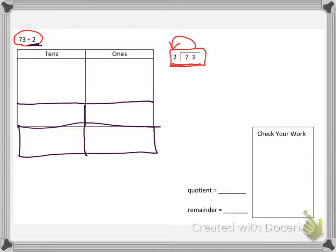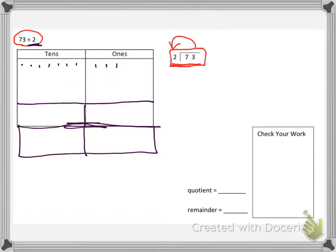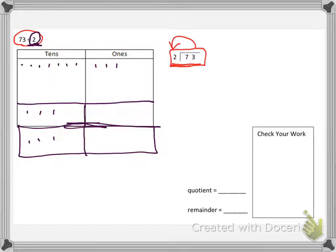We're going to make this into two groups because we're dividing by 2. How many tens do we have? We have 7 tens: 1, 2, 3, 4, 5, 6, 7. And how many ones do we have? We have 3 ones: 1, 2, 3. Now we're going to break up this 7 because we're going to divide it and spread them apart into two groups. So here we go: 1, 2, 3, 4, 5, 6. So that means we were able to get rid of 6.